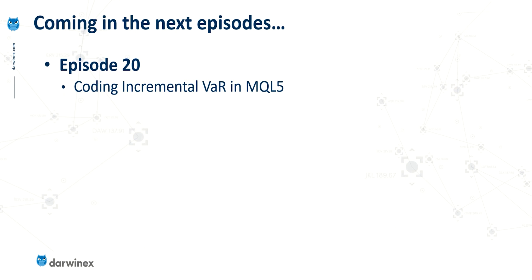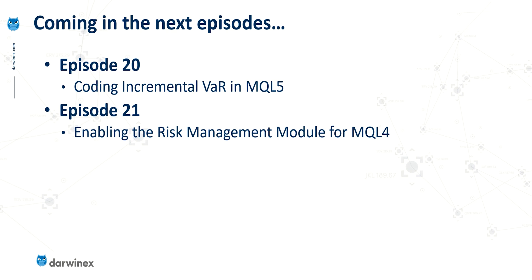In the next episode, we'll actually code this incremental value at risk so that the blue arrow and risk scale can be quantifiably used within the MetaTrader platform. Then in the following episode, I'm going to show you how you can take this MQL5 code and make it usable within a MetaTrader 4 environment, which will conclude our discussions on value at risk and using this analysis to help inform decisions.